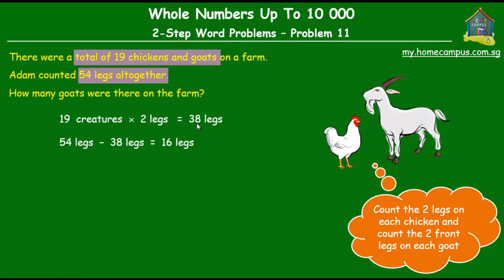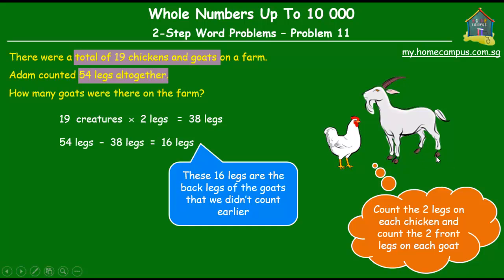There were 54 legs in all and we have counted 38 of them. So what we are left to count is 54 minus 38, which is 16 legs. What we did on the goats is count only their front legs. So these 16 legs are obviously the back legs of the goats that we didn't count.